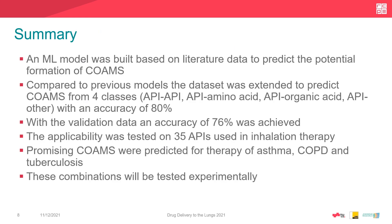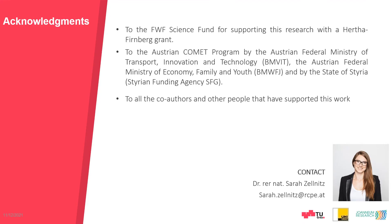In summary, a machine learning model was built based on literature data to predict the potential formation of co-amorphous systems. Compared to previous models, the dataset was extended to predict co-amorphous systems from four classes — API–API, API–amino acid, API–organic acid, and API–other — achieving an accuracy of 80% on training data and 76% on validation data. The applicability was tested on 35 APIs used in inhalation therapy, and promising API pairs were identified for the therapy of asthma, COPD, and tuberculosis, which will now be tested experimentally. Thanks to the FWF Science Fund for supporting this research and to our co-authors.